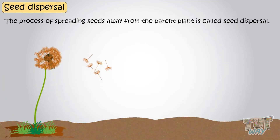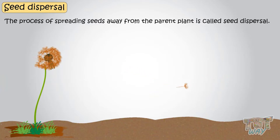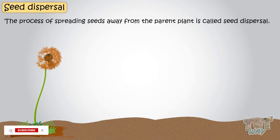This process of spreading seeds away from the parent plant is called seed dispersal. There are many means of seed dispersal — let's learn about them.